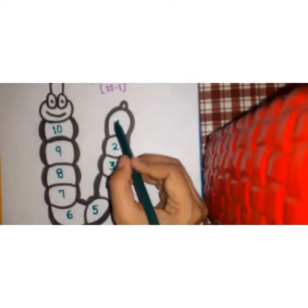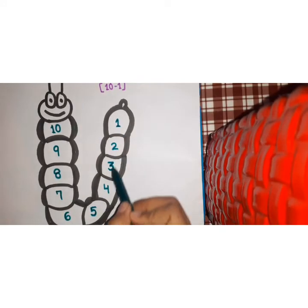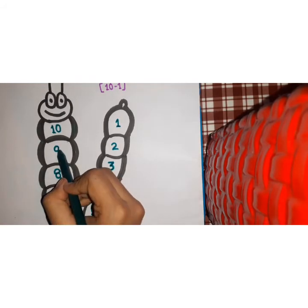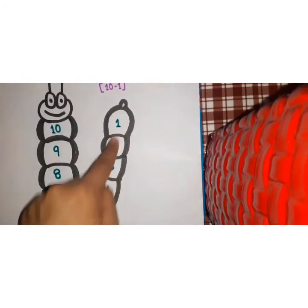And what is our counting? 1, 2, 3, 4, 5, 6, 7, 8, 9, 10. Usually we are counting.